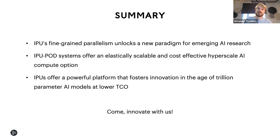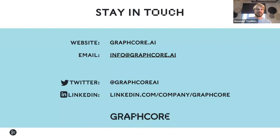In summary: IPU fine-grained parallelism unlocks a new paradigm for emerging AI research; EfficientNet B4 with its depthwise separable convolutions is an example that benefits from the finer-grain IPU architecture. IPU Pod systems offer elastically scalable and cost-effective hyperscale AI compute. IPUs offer a powerful platform fostering innovation in the age of trillion-parameter AI models at lower total cost of ownership. Please follow us on Twitter, LinkedIn, and Facebook — we are actively hiring for engineering roles in the US.